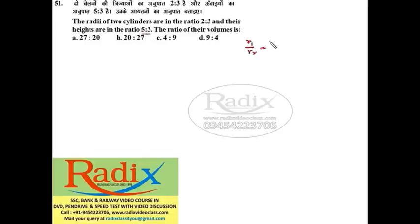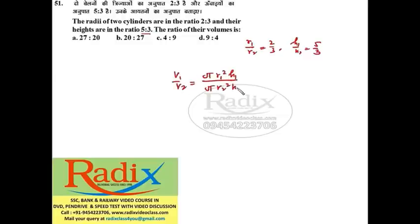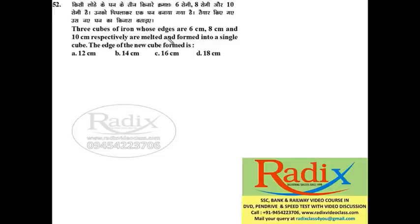Question 51: The radii of two cylinders are in the ratio 2:3 and their heights are in the ratio 5:3. Volume 1 upon Volume 2 equals pi·r1²·h1 upon pi·r2²·h2. Pi cancels; r1²/r2² is 4/9 and height ratio is 5/3, so the answer is 20/27. Answer is option B.